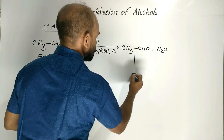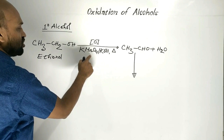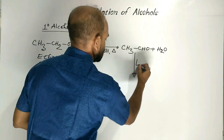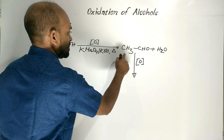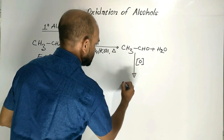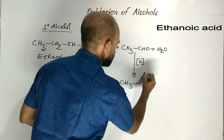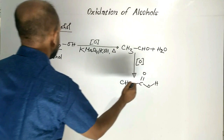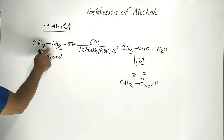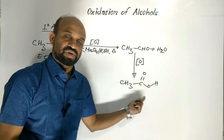Then ethanal is oxidized with the same oxidant, and ethanal converts to ethanoic acid. That is, when 1 degree alcohol is oxidized, acetic acid is obtained.